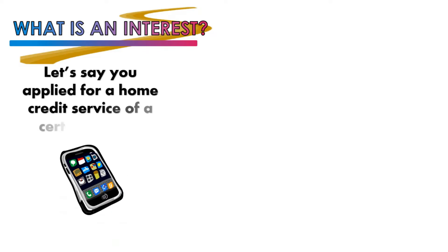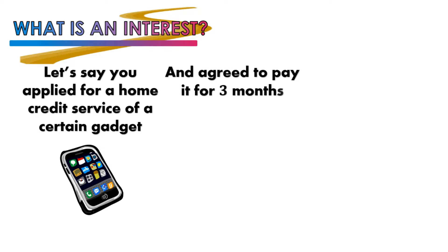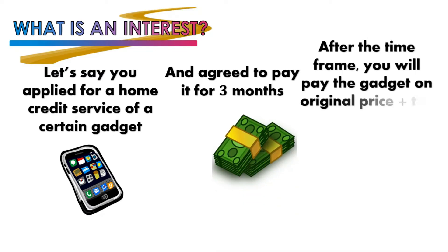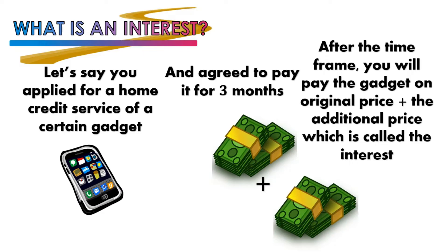For example, you applied for a home credit service for a gadget, say a cell phone. You and the lender agreed that you will pay for the gadget in 3 months. After 3 months, when the due date arrives, you will pay the original price of the gadget plus an additional price called interest. That is your total payment after 3 months — the original price plus the added percentage because the money was tied up for those 3 months.